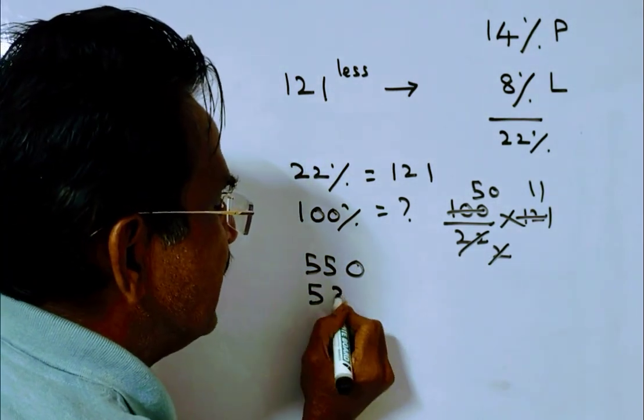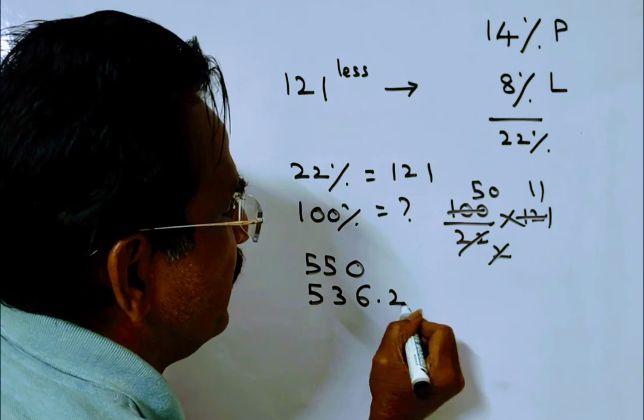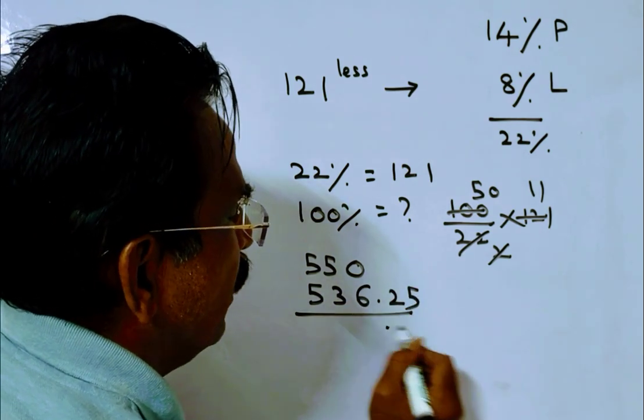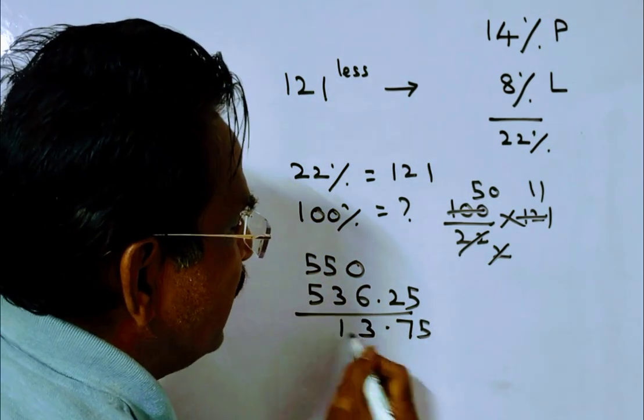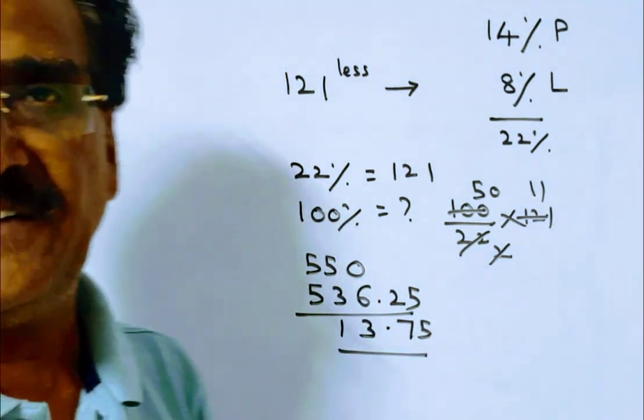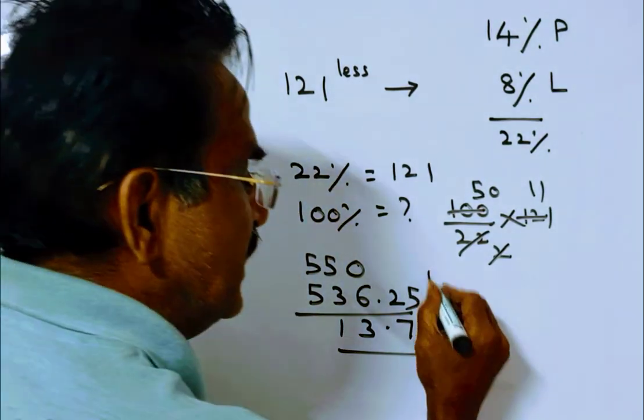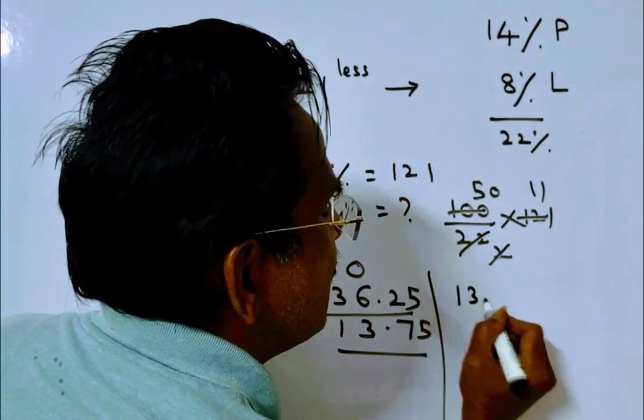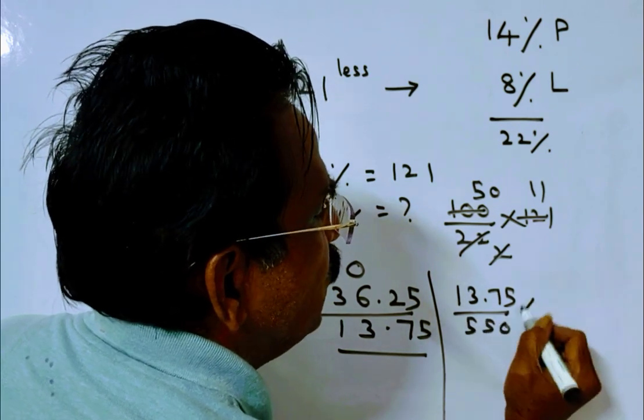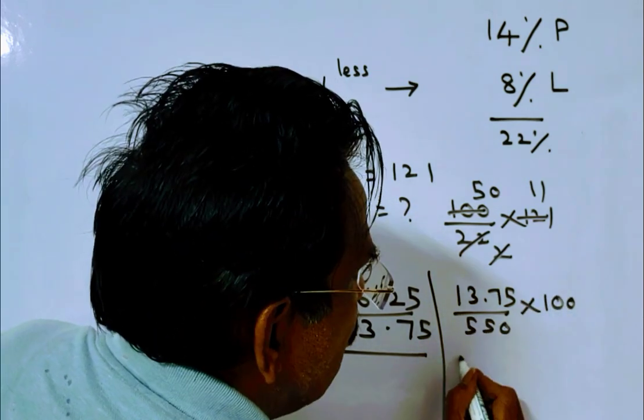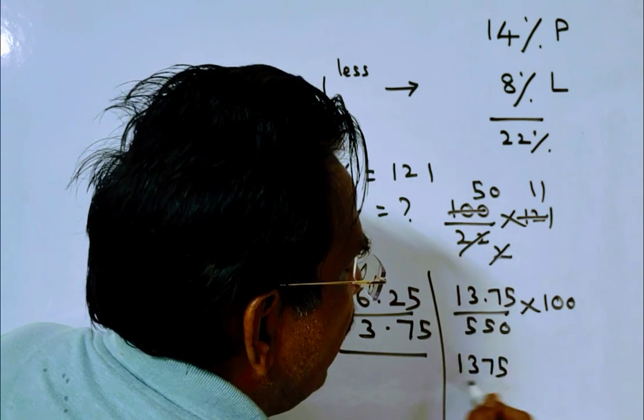550 is the cost price and selling price is 536.25. So the loss is 9 minus 63, which is 13.75. Now the loss percent is equal to loss upon cost price, 550, into 100, that is equal to 1375 by 550.